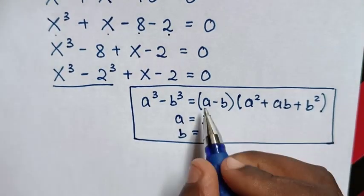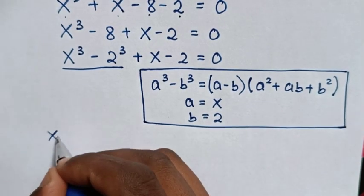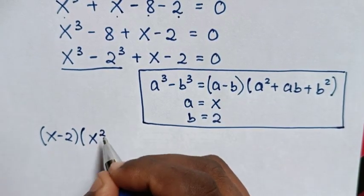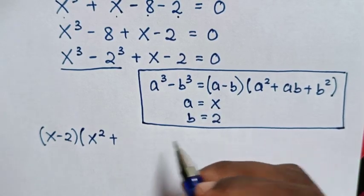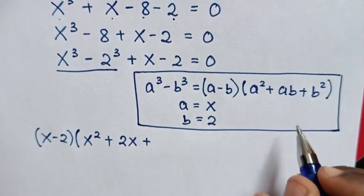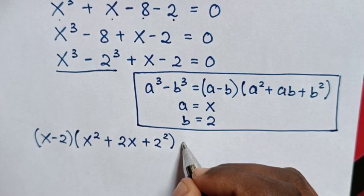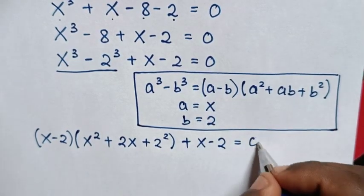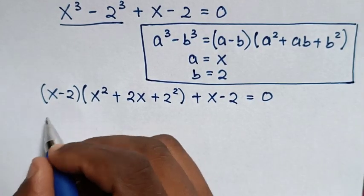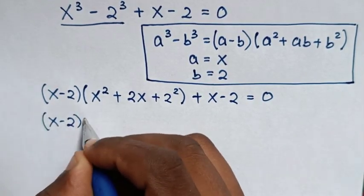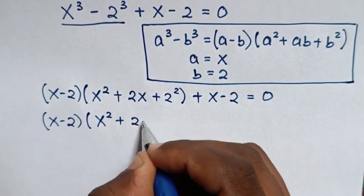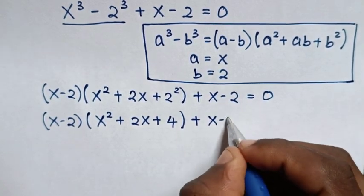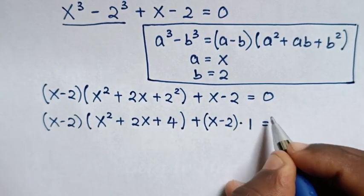Then in the next step, from (a minus b), it will be (x minus 2) times (a squared is x squared, plus a times b which is 2x, plus b squared which is 2 squared). Then plus (x minus 2), giving us (x minus 2) times (x squared plus 2x plus 4) plus (x minus 2) times 1 is equal to 0.